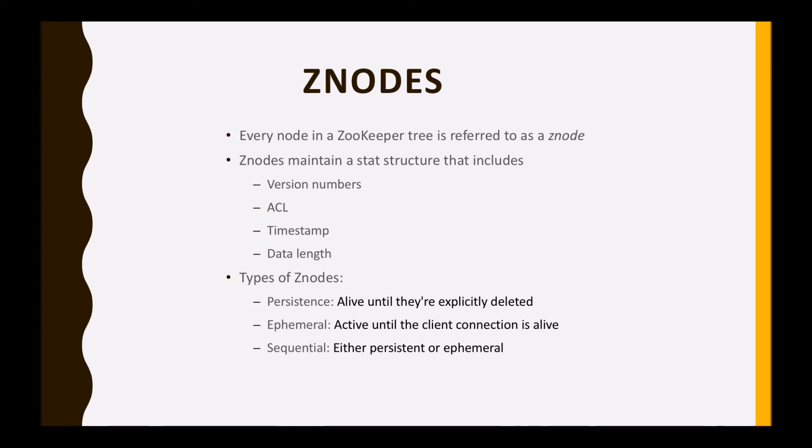The next type is the ephemeral node. These are active until the client connection is alive. As soon as the client gets disconnected from ZooKeeper, the ephemeral Z nodes are deleted automatically. They are kind of dynamic nodes.